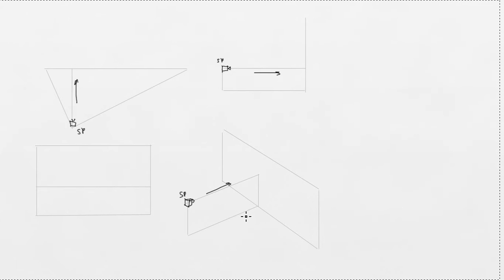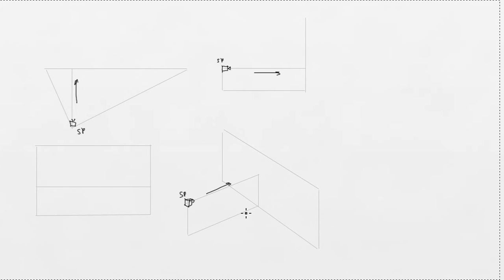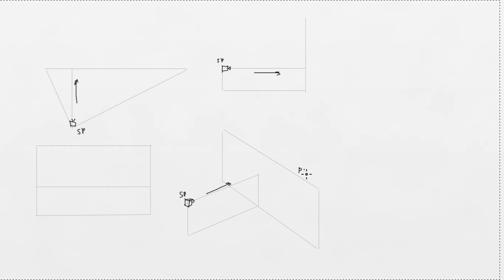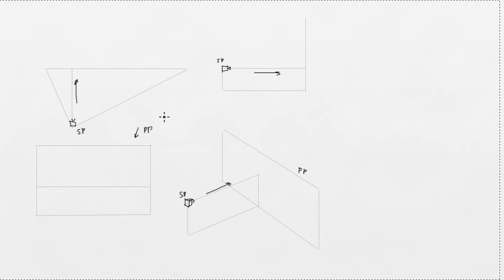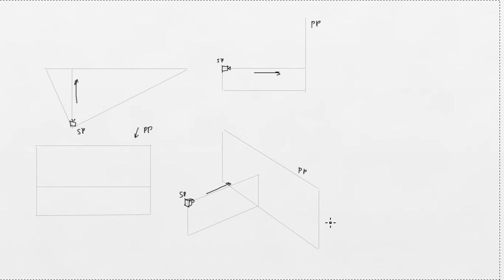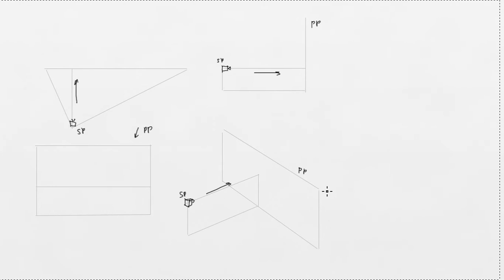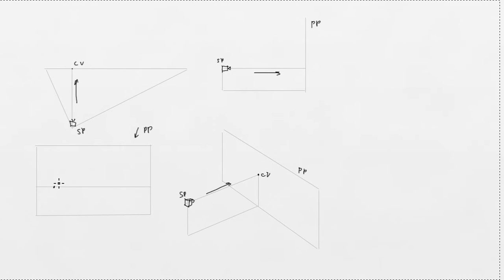Picture plane is an imaginary plane between the observer and an object. You could imagine it as a flat piece of glass that is perpendicular to the line of sight. We can see the picture plane here, and here. Center of vision is the point where the line of sight intersects the picture plane. We can find it here.